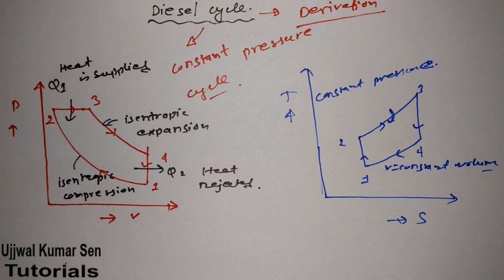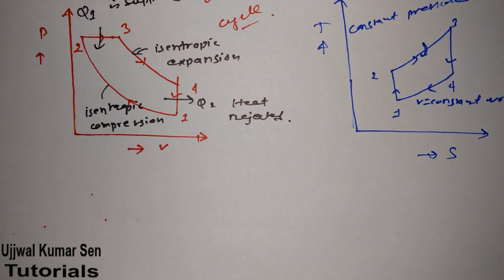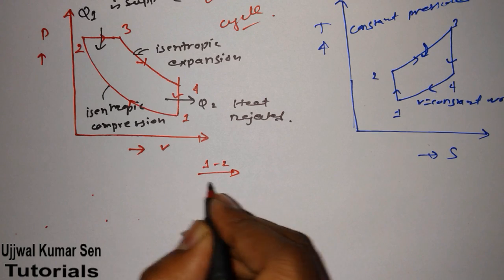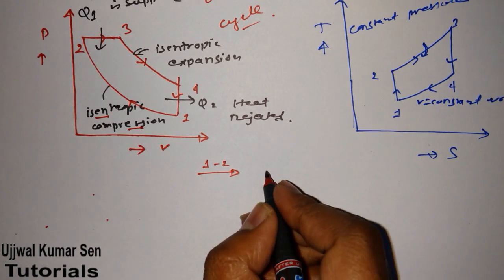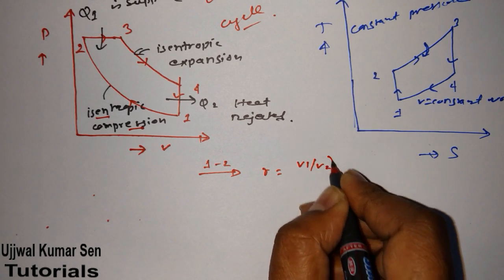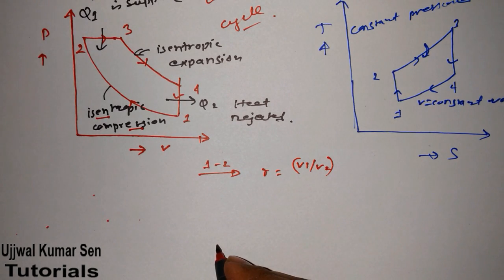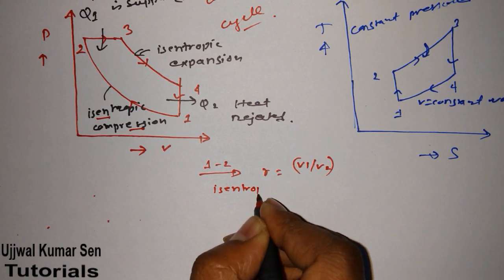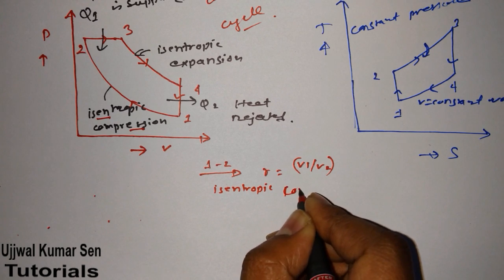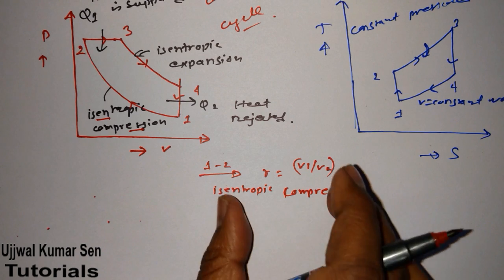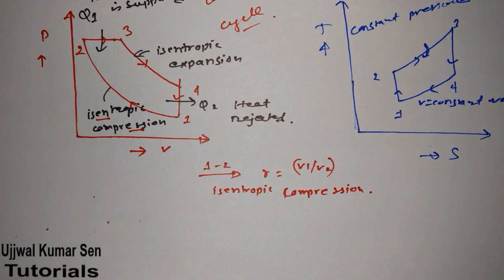Now let's go through each process. Process 1 to 2 is isentropic compression. The compression ratio is V1 by V2. This is isentropic compression — you need to write this in the examination along with the diagram.